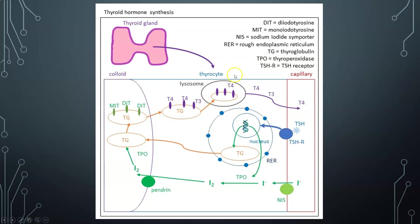Here is a graphic that summarizes this. You have the thyrocyte — the thyroid cell — with these cells surrounding the colloid core in the middle. The capillary, or blood supply, brings iodine, and the sodium-iodine symporter helps move that iodine into the thyrocyte. TSH, as it binds to the TSH receptor, stimulates the cells to turn on production of thyroglobulin and thyroperoxidase.